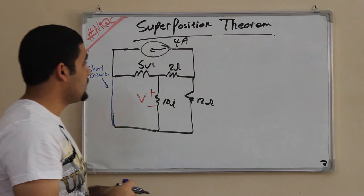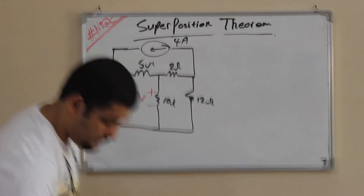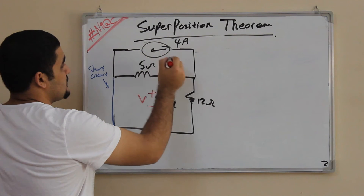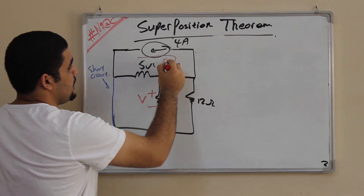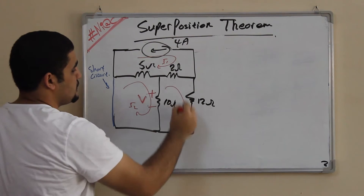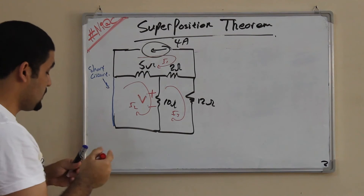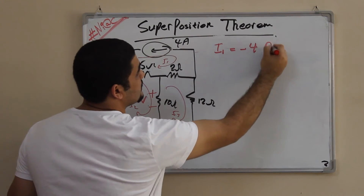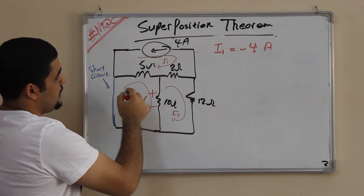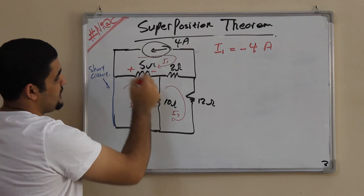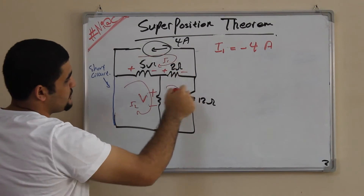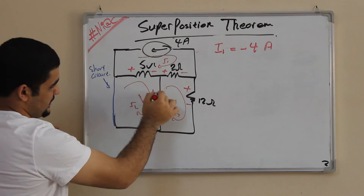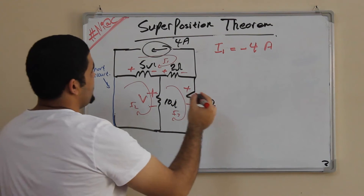Now, solving this second circuit the same as before using mesh analysis. Here are my loops: i1, i2, and i3. i1 is equal to minus 4 amps from the current source. For i2, I assume the plus is here and minus there; and for i3, plus here minus there.